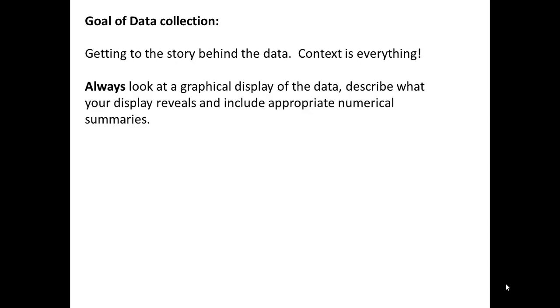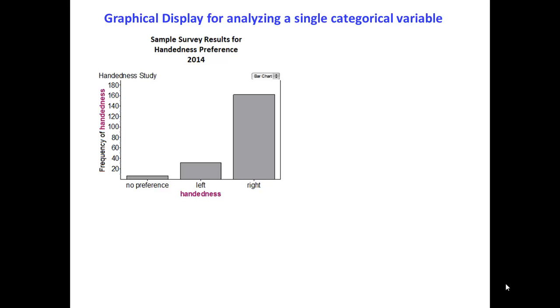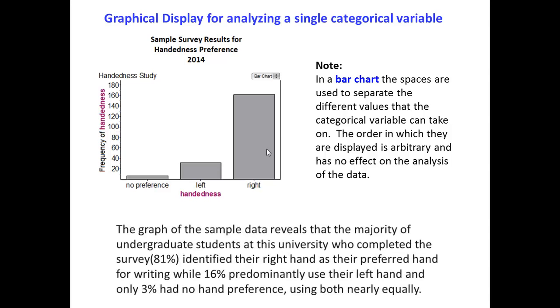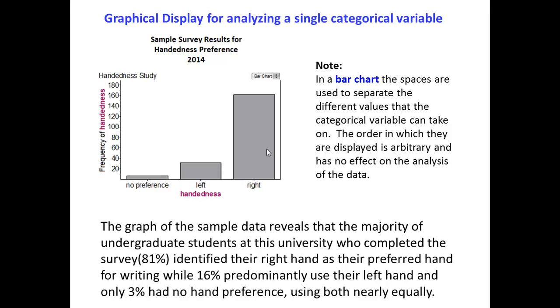We'll look at graphical displays for analyzing a single categorical variable. Here we see a bar chart. On the horizontal axis are the three values of the categorical variable handedness: no preference, left, and right hand. Note that in a bar chart, spaces are used to separate the different values of the categorical variable. The order in which they are displayed is arbitrary and has no effect on the analysis of the data. The graph reveals that 81% of students identified their right hand as their preferred hand for writing, while 16% predominantly used their left hand, and only 3% had no hand preference.